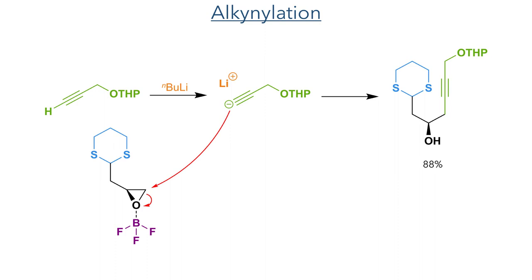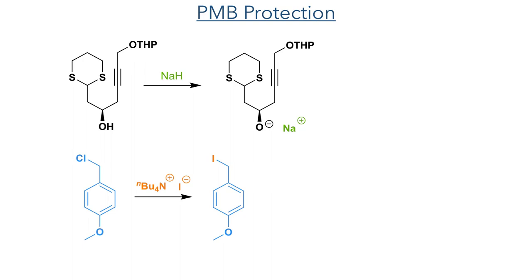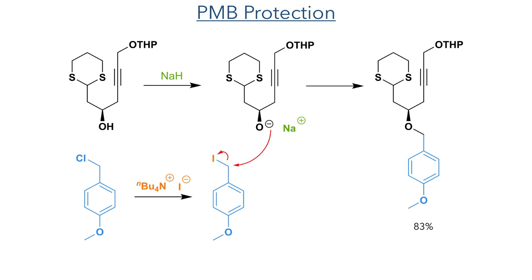The alcohol produced by this reaction was then protected using a PMB group. Sodium hydride first deprotonates the alcohol, and PMB chloride is reacted with TBAI, which displaces the chloride, forming the more electrophilic iodide. This is then attacked by the alcohol, forming the protected product in an 83% yield.